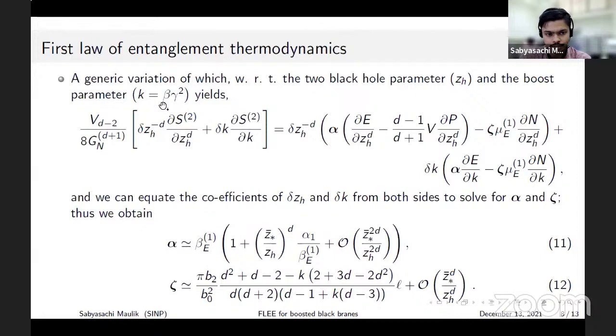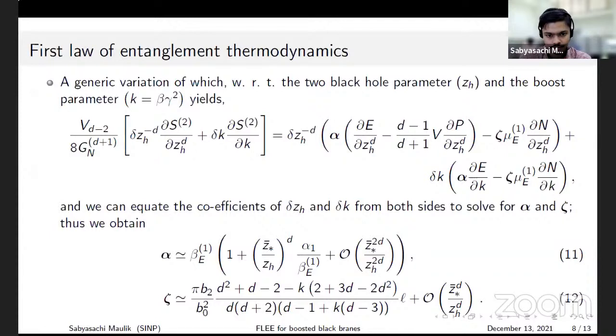We vary with respect to z_h and beta gamma squared equals k and then compare their coefficients.